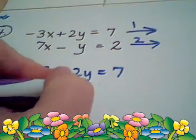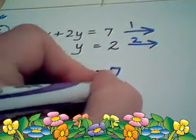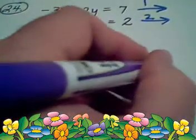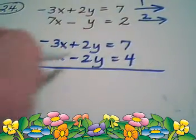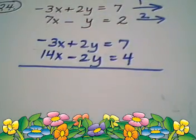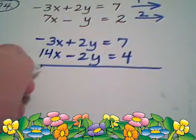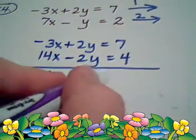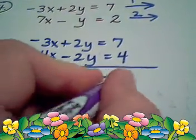Now look what happens now when I add both sides of the equations together - this becomes 11x, the Y's eliminate which is what we wanted to have happen, and this is equal to 11.